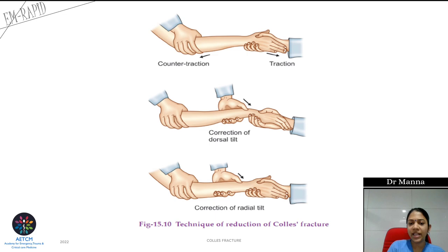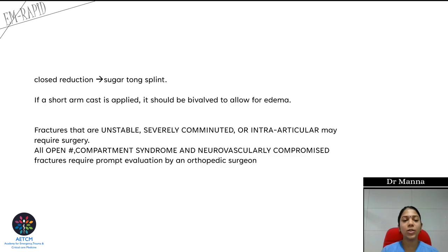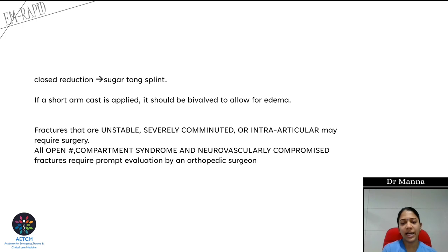After correcting the dorsal tilt, pronate the hand and correct the radial tilt. After reduction, apply the sugar tong splint and then take a check X-ray. Immobilize the limb for six weeks. If a short arm cast is applied instead of a splint, it must be bivalved to allow for swelling and prevent compartment syndrome.